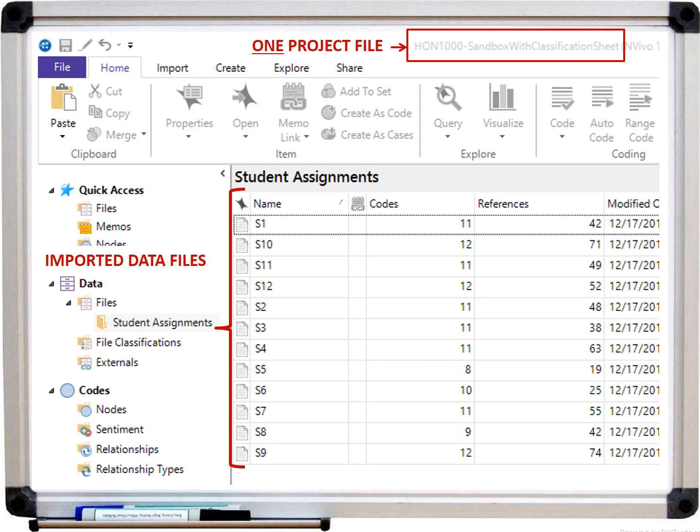I'm going to use some screenshots from NVivo to demonstrate the utility of using a qualitative data analysis software. First, you have one NVivo project file into which you import all of your separate data source files. To open a data source, you just double-click it.